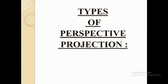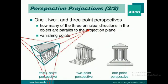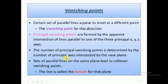Now we will see types of perspective projection. There are three types: one-point perspective, two-point perspective, and three-point perspective. Vanishing points are formed by the apparent intersection of lines parallel to one of the three principal axes — X, Y, or Z. Sets of parallel lines on the same plane lead to collinear vanishing points; the line is called the horizon for that plane.